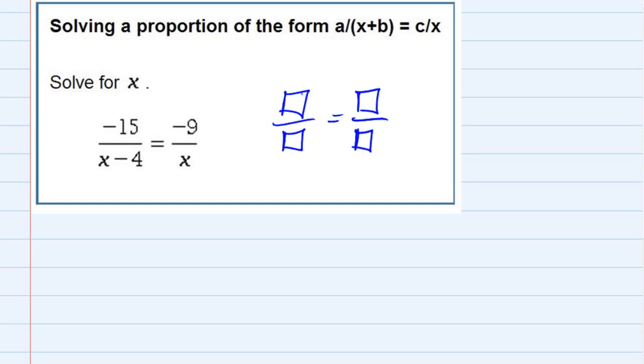Since it's a proportion, we can use the fact that whenever we multiply along one of the diagonals, we have to get the same thing as we do when we multiply along the other diagonal.